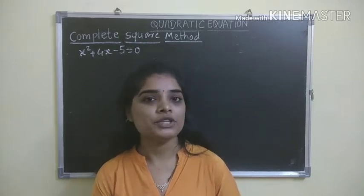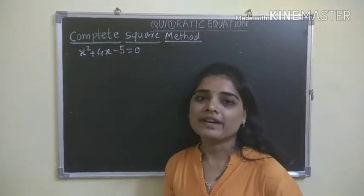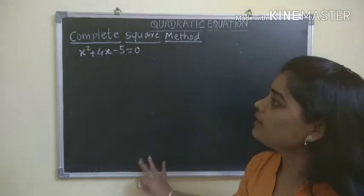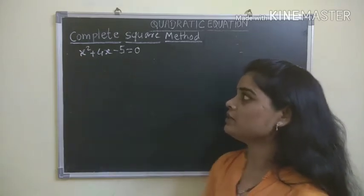We will solve the quadratic equation by a complete square method. Last time we solved by a factorization method. So here I took one sum: x² + 4x - 5 = 0.